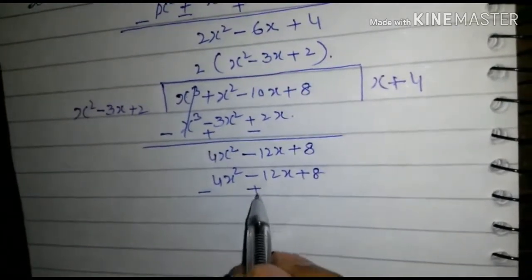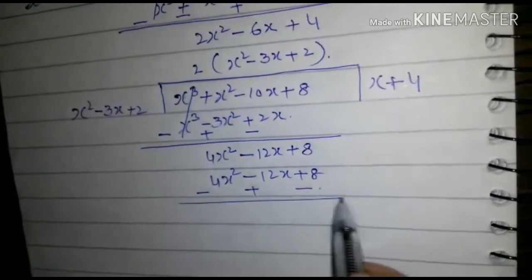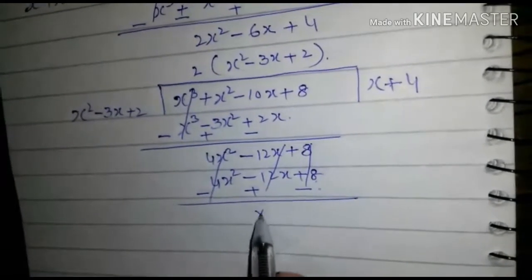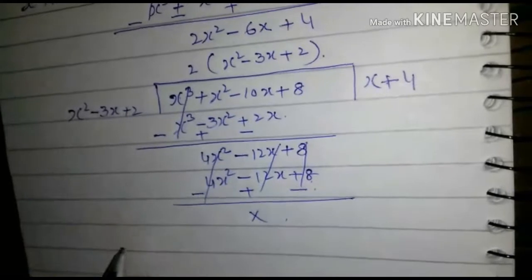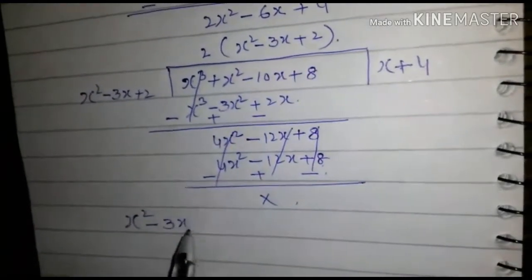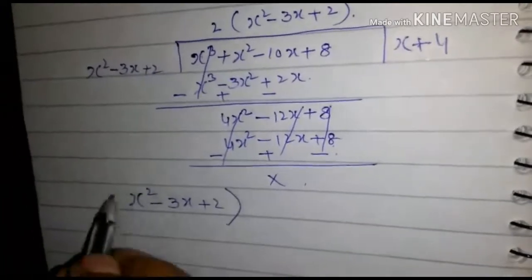x² - 3x + 2 is equal to HCF of the given expressions.